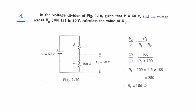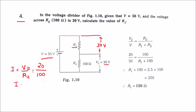Problem four: in the voltage divider of figure 1.10, given that V is 50 volts and the voltage across R2 (100 ohms) is 20 volts, calculate the value of R1. Since the supply voltage is 50 volts and V2 is 20 volts, the voltage across R1 is the remaining 30 volts. Using I = V/R with R2: I = 20 divided by 100, so I = 0.2 amps.